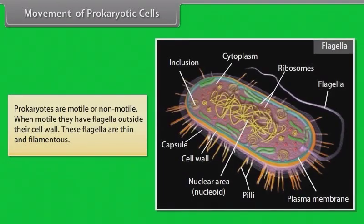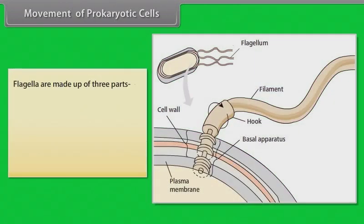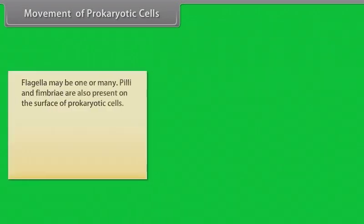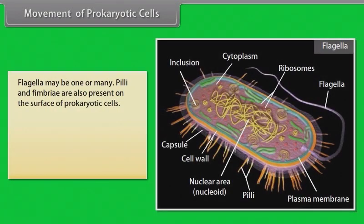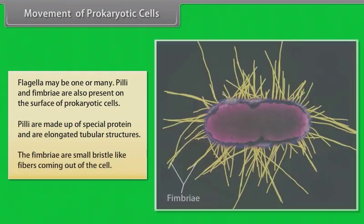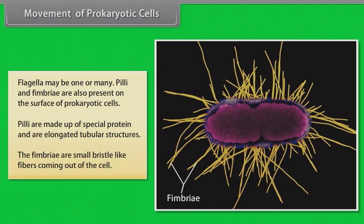Prokaryotes are motile or non-motile. When motile, they have flagella outside their cell wall. These flagella are thin and filamentous and are made up of three parts: filament, hook, and basal body. The filament is the longest portion of flagella, which extends from the cell surface to the outside. Flagella may be one or many. Pili and fimbria are also present on the surface of prokaryotic cells. Pili are made up of special protein and are elongated tubular structures, while fimbria are small bristle-like fibers coming out of the cell.